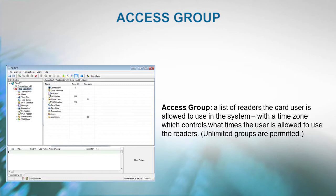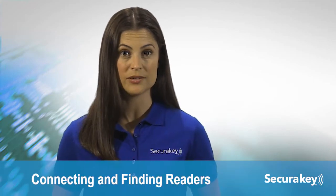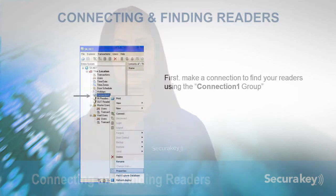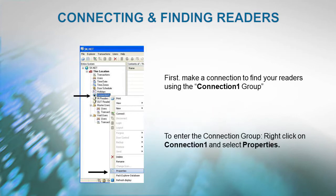You can create as many access groups as you need. To connect and find your readers, the first thing to do is make a connection to find your readers using the Connection 1 group. To enter the connection group, right click on Connection 1 and select Properties.